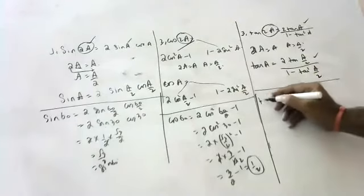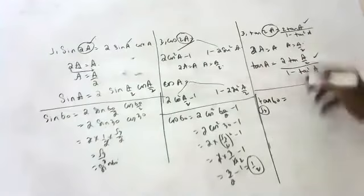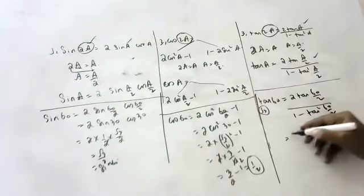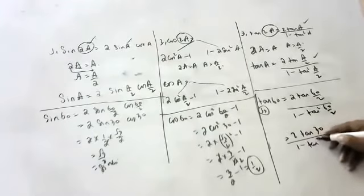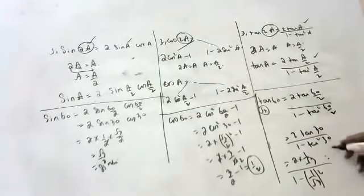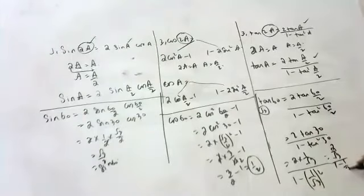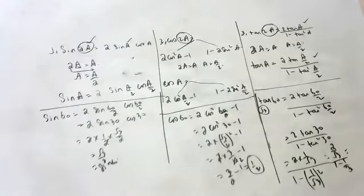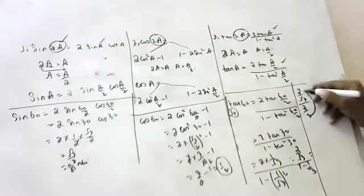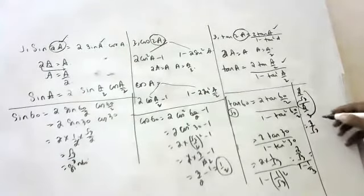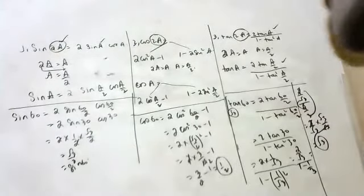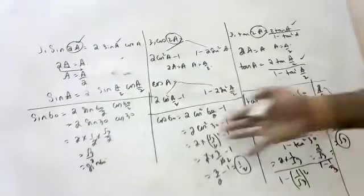Let's verify with tan 60. Using the formula: 2 tan(60/2) / (1 − tan²(60/2)) = 2 tan 30 / (1 − tan²30). Tan 30 is 1/√3, so this becomes 2×(1/√3) / (1 − 1/3) = (2/√3) / (2/3). Simplifying: (2/√3) × (3/2) = 3/√3 = √3. So we get √3, which is tan 60. All the formulas are verified. I am showing you these derivations so you understand how the formulas are obtained.